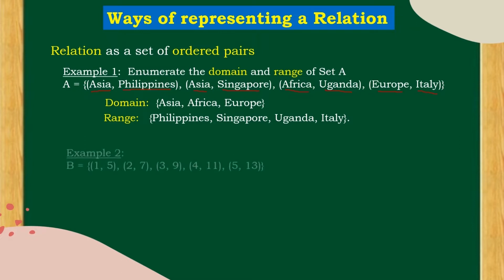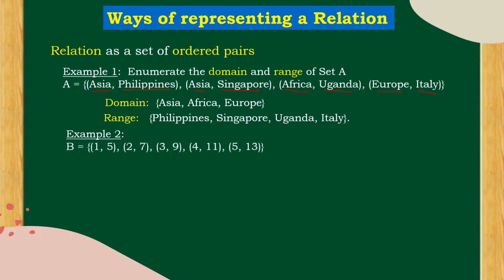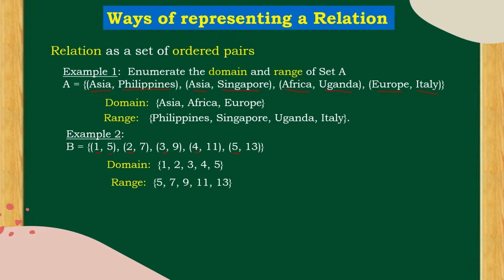Let's have example number 2. Enumerate the domain, which are the x-coordinates: 1, 2, 3, 4, and 5. The range, which is the set of second coordinates, is: 5, 7, 9, 11, and 13.